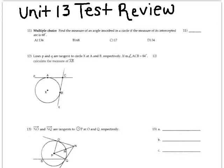Number 11. Find the measure of an angle inscribed in a circle if the measure of its intercepted arc is 68 degrees. This is testing your vocabulary. Do you know what I'm talking about when I say an angle inscribed in a circle? An inscribed angle looks like this. And when I say that the intercepted arc is 68, that means that this part of the circle from here to here is 68 degrees.